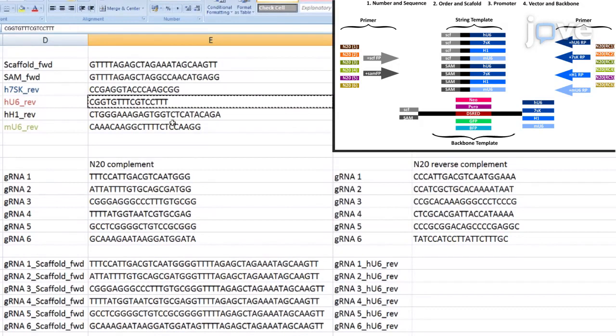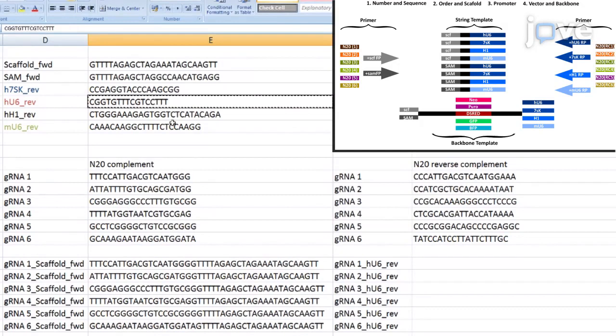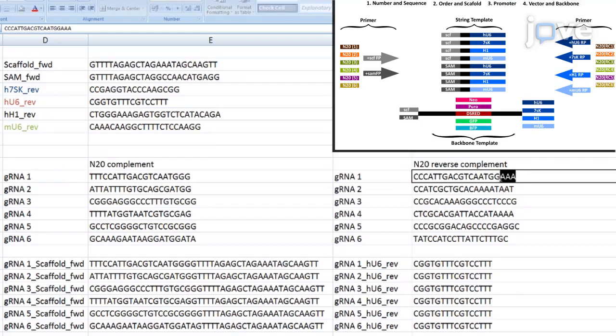Next, add the reverse complement n20 gRNA sequences to the reverse primer sequences, choosing RP primers depending on the specific promoters and strings used.